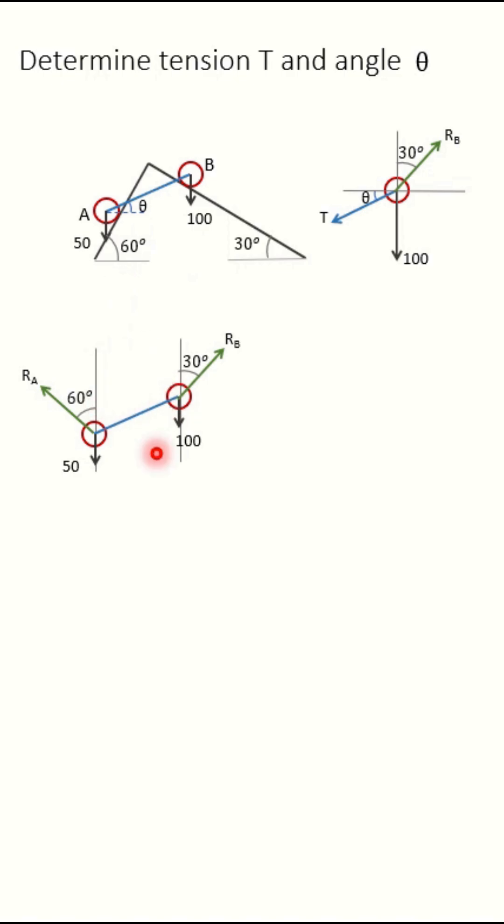Draw all these forces at one point. RB and RA are making angle of 90 degree. So take this RB as x-axis and RA as y-axis. This is y-axis and this is our x-axis. Now apply Sigma Fx is equal to 0.